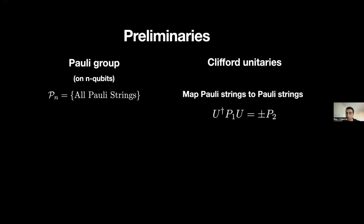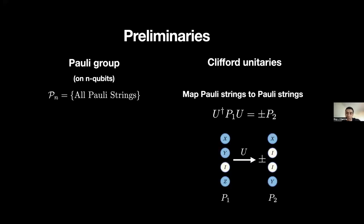It'll be useful to talk about Clifford unitaries. By definition, these are unitaries which map a Pauli string to another Pauli string. What I mean is: if I take a Pauli string P1 and evolve it with a Clifford unitary U, I get back string P2 up to some phase. In this presentation, it's more intuitive to denote this process as U just mapping P1 to P2.